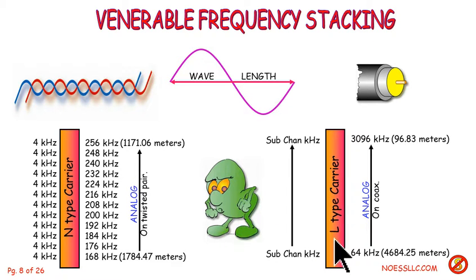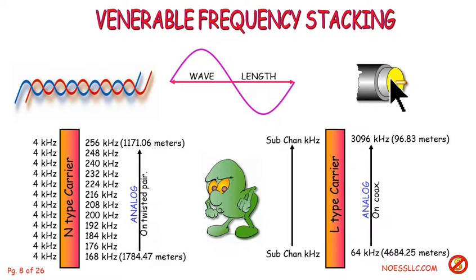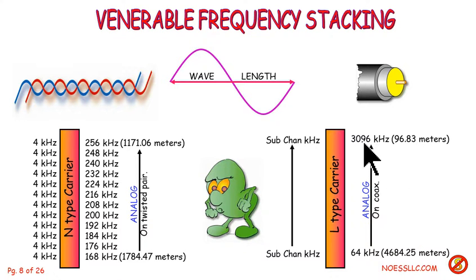Moving over to a higher capacity carrier system: L-type carrier. We bring in our kilohertz analog channels and do the same thing — just at a higher frequency, jacking things up to really high frequencies. The only difference between this and the previous system is that L-type works on coaxial cable, which is a better transmission facility for these higher frequencies than twisted pair. But it's still analog in, analog out, kilohertz throughout.